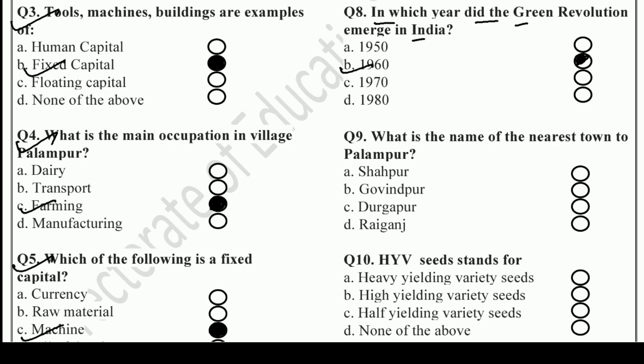Question number 9: What is the name of the nearest town to Palampur? Options are Shapur, Govinpur, Durgapur, and Raiganj. The right answer is A — Shapur. You have to mark and darken that circle.